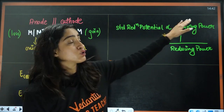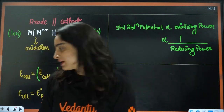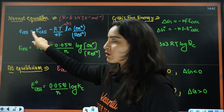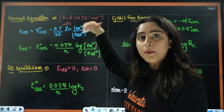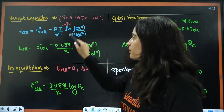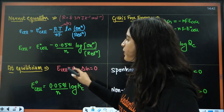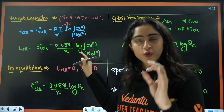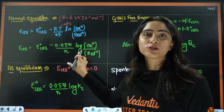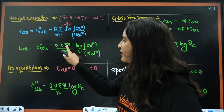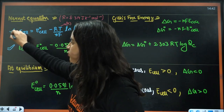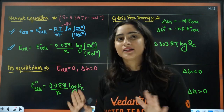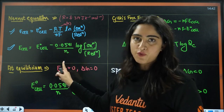Standard reduction potential is directly proportional to oxidizing power and inversely proportional to reducing power. Next, we have the Nernst equation. The formula relates E cell to E⁰ cell. In the log term, above we have what is getting oxidized and below what is getting reduced. For standard conditions at standard temperature, this becomes E cell equals E⁰ cell minus 0.0591 divided by n times log Q. Remember these two forms of the Nernst equation. If no temperature is given, you assume standard temperature and apply that formula.